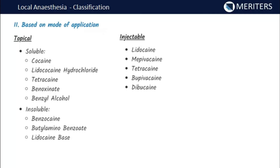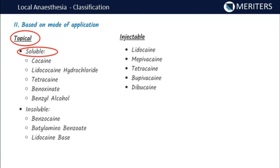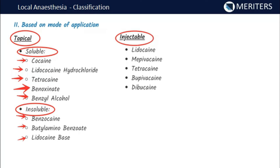The next classification is based on mode of application: topical or injectable. Topical agents are subcategorized into soluble and insoluble. Soluble topical agents include cocaine (the only natural local anesthetic), lidocaine hydrochloride, tetracaine, benoxinate, and benzyl alcohol. Insoluble topical agents include benzocaine, butyl aminobenzoate, and lidocaine.